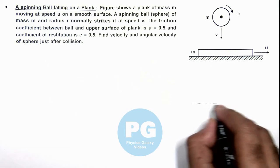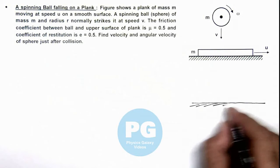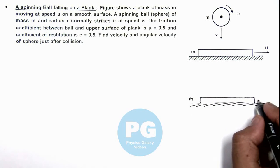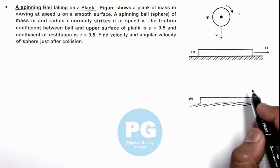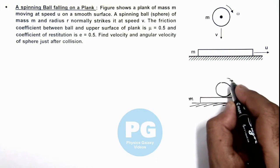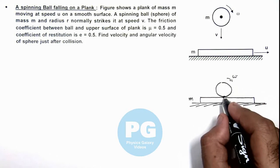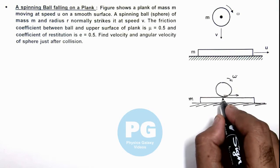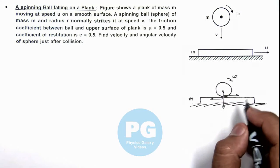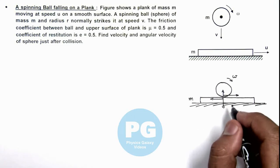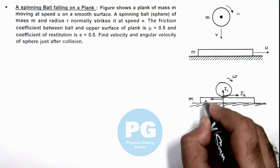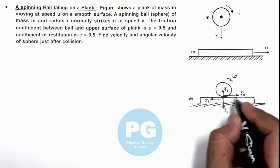Analyzing the situation at the point of collision: the plank of mass m was moving initially at speed u. When the ball strikes, it was rotating at angular speed omega. At the point of contact, friction will act in the opposite direction, and an impulse will act normal to the surface. These are the impulses J1 in the vertical direction and J2 in the horizontal direction, due to the normal reaction and friction acting on the ball.